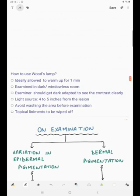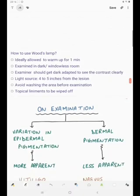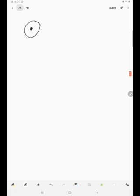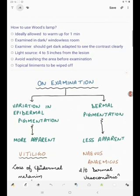How to use Wood's lamp. Ideally the Wood's lamp is allowed to warm up for one minute. It is to be examined in a dark or windowless room. The examinant should get dark adapted to see the contrast clearly because whenever we come from a lighted room, our pupils are usually constricted. The light source should be 4 to 5 inches from the lesion. You should avoid washing the area before examination and any topical elements that have been applied are to be wiped off.